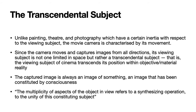There is some consciousness that is constituting that image. The multiplicity of aspects of the object in view refers to a synthesizing operation and to the unity of this constituting subject. You are capturing one image from a multiplicity of aspects, from a multiplicity of viewpoints, including some that are not available to an ordinary human eye. When you bring all these multiplicities of angles together, we get a synthesized image. The particular object we are capturing looks as if it has been synthesized, looks as if there is a totality to it.